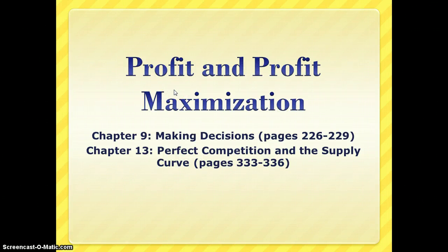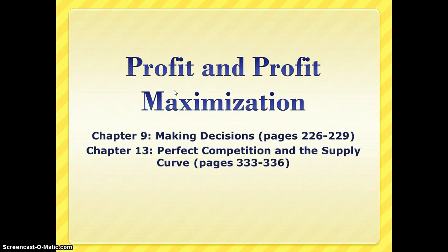Hi, welcome back. Today we're going to look at profit and maximizing profit from an economic perspective. More specifically, we'll look at the difference between implicit and explicit costs, two different types of profit — accounting and economic profit — and how to calculate profit and figure out the profit-maximizing level of output for a firm.